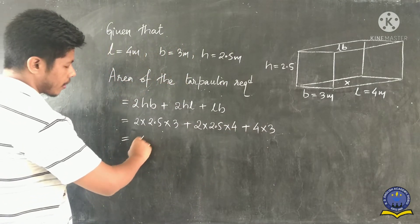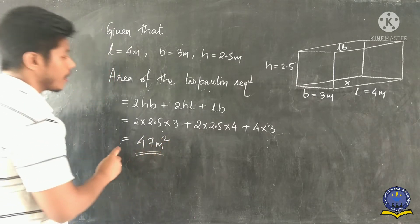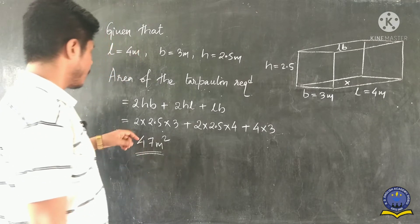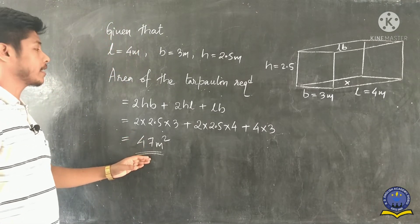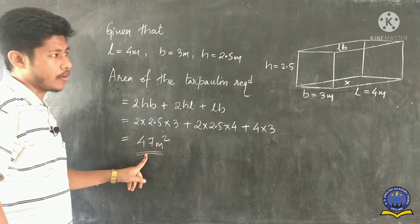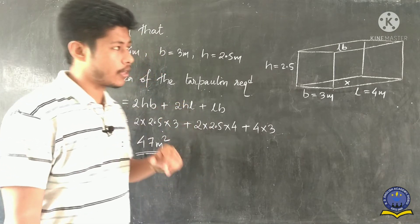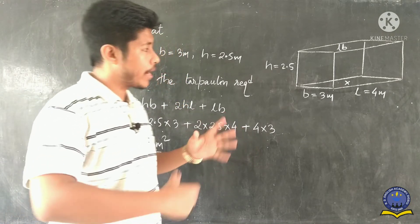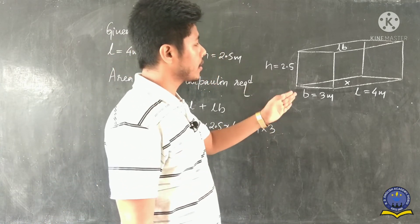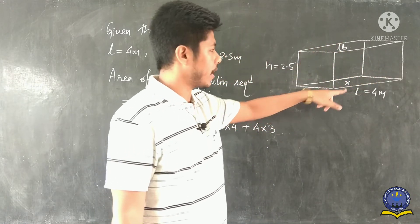Calculating all the values, we get 47 square meters. So the area of tarpaulin required is 47 m². This is the required answer. If we see the question again, we have to make a shelter for a car — four walls plus the top part, ignoring the bottom.